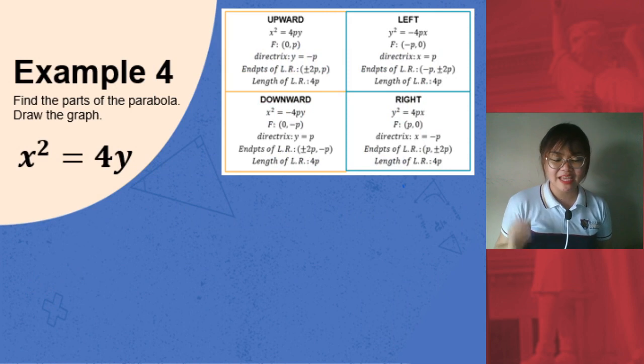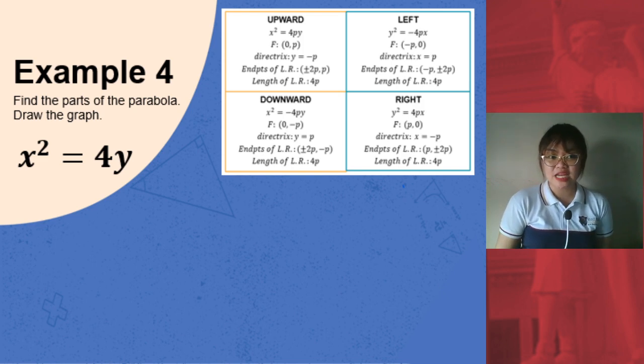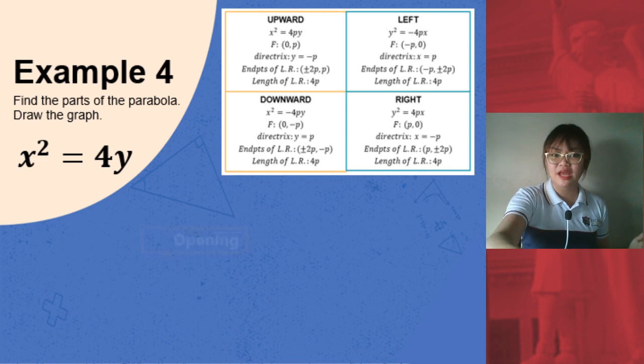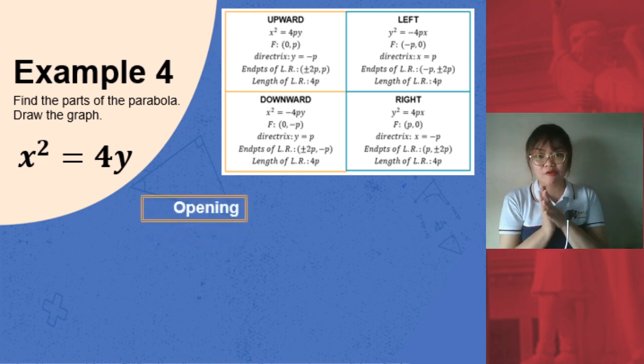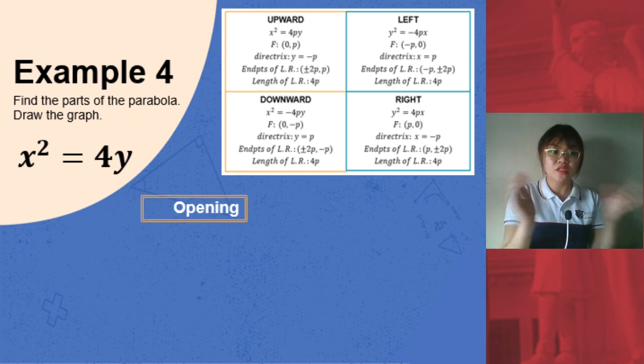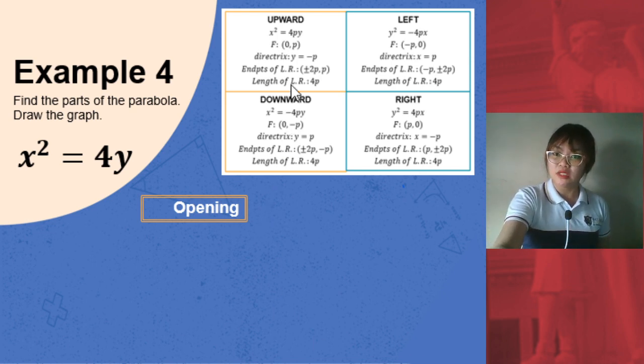Our first example and example number 4 of our series, we find the parts of the parabola and draw the graph given x squared equals 4y. So first, we have to identify what case is it. Is it opening upward, downward, left, or right? Let's first identify where our parabola is opening. So we have x squared. That means we are just looking at upward or downward because we have x squared in our given. Left and right is y squared. So if we have x squared for both up and down, let's look at our given again. Is it positive or negative? It's positive. Therefore, it's opening upward.